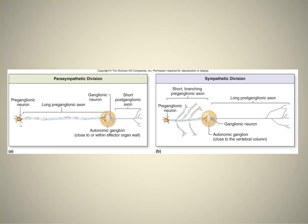The preganglionic cell body is in the spinal cord, and we have a long preganglionic axon to an autonomic ganglion that's close to the effector organ. That's where the cell body for the postganglionic cell is, and there's a short postganglionic axon to the effector organ.